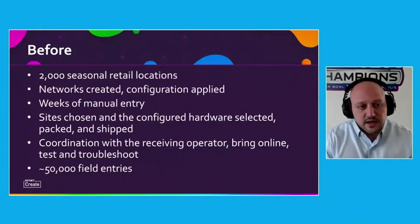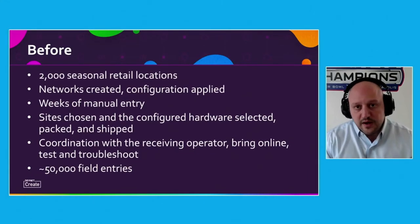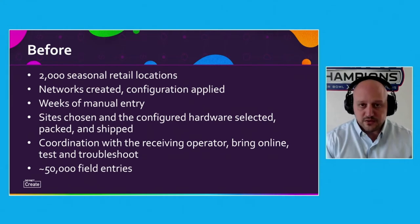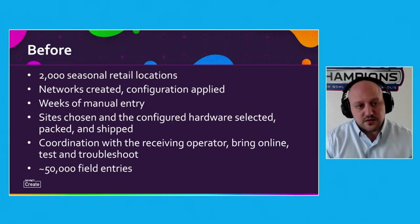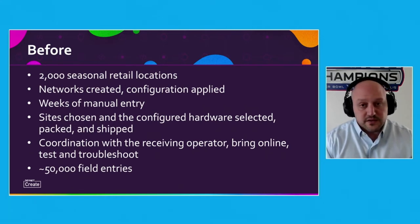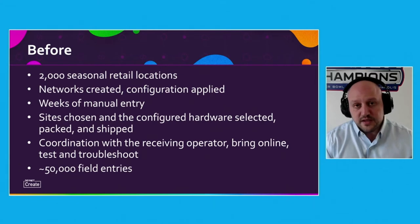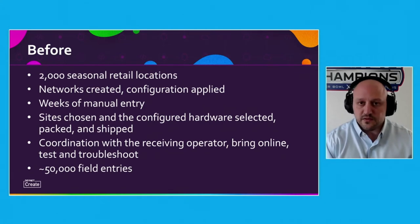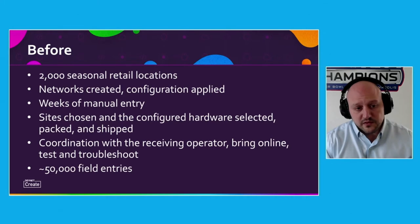Getting into what we were solving for: this customer has 2,000 seasonal retail locations throughout the United States. The way they were going about it prior to the solution was creating networks manually and then going into each of those networks and applying the different configurations — firewall rules, some basic routing information. DHCP or fixed IP assignments were used heavily in this environment for some security and software reasons. But it was weeks of manual entry, somewhere between four and six weeks.